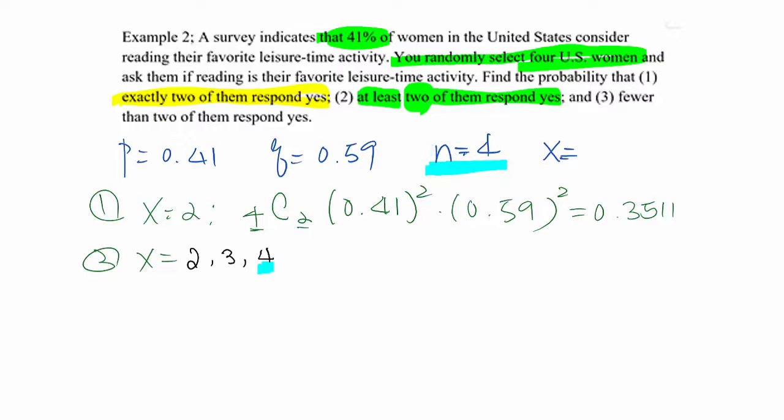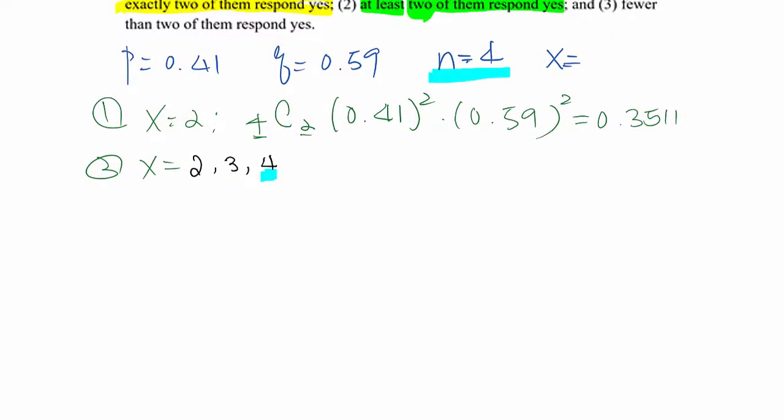Which means, unfortunately, in a binomial case, you need to find each probability separately and combine them together. So in this case, you find P(2), P(3), and P(4) separately and you combine them.